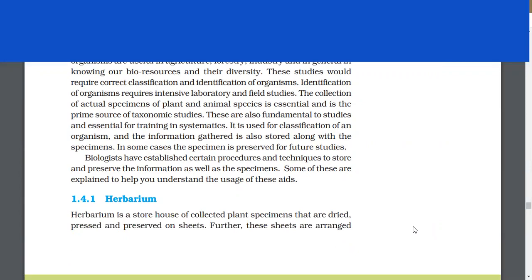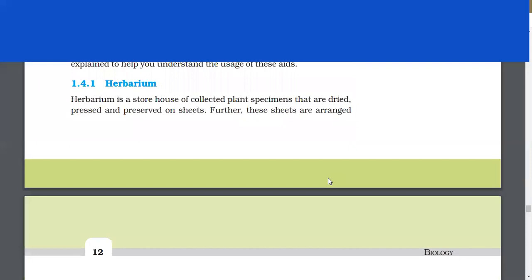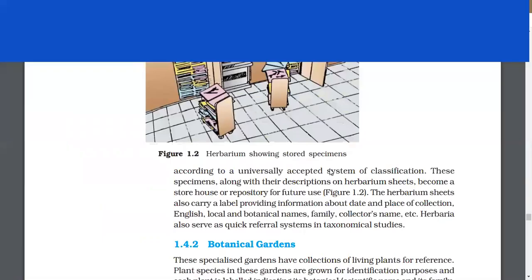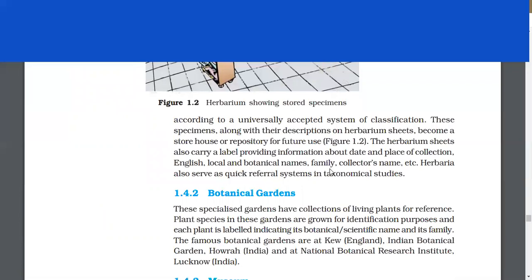Herbarium. Herbarium is a storehouse of collected plant specimens that are dried, pressed, and preserved on sheets. Further, these sheets are arranged according to a universally accepted system of classification. These specimens along with their descriptions on herbarium sheets become a storehouse or repository for future use. The herbarium sheets also carry a label providing information about date and place of collection, English, local and botanical name, family, collector's name, etc. Herbaria also serve as quick reference systems in taxonomical studies.